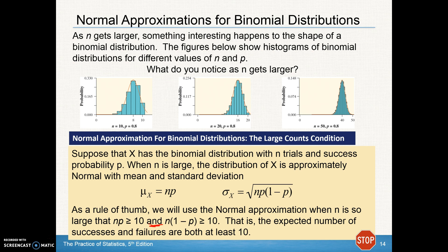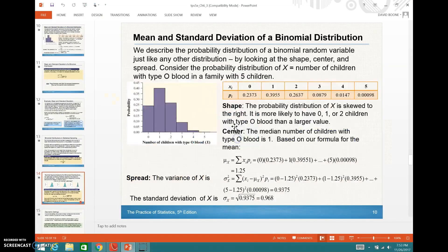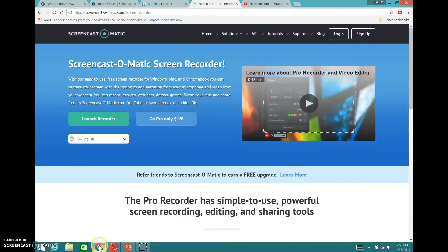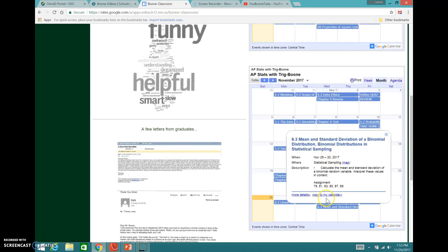Alright, that's ending day two of section 6.3. That should give you the skills and ability to work on the second half, or day two, of 6.3, problems number 79, 81, 83, 85, 87, and 89, and be able to calculate the mean and standard deviation of a binomial random variable. Good luck, and we'll see you for the last lesson of 6.3 in the next video.